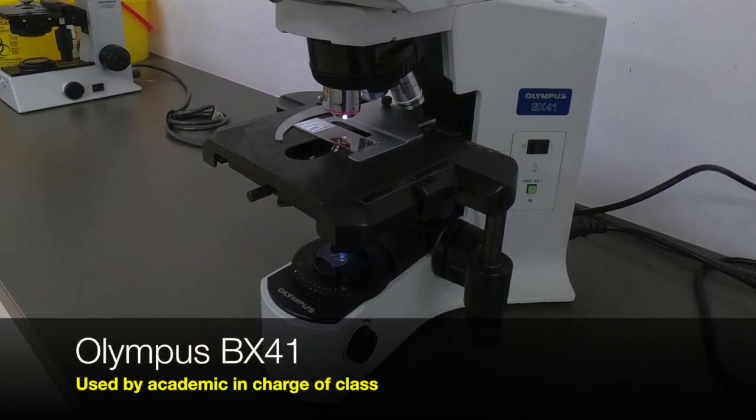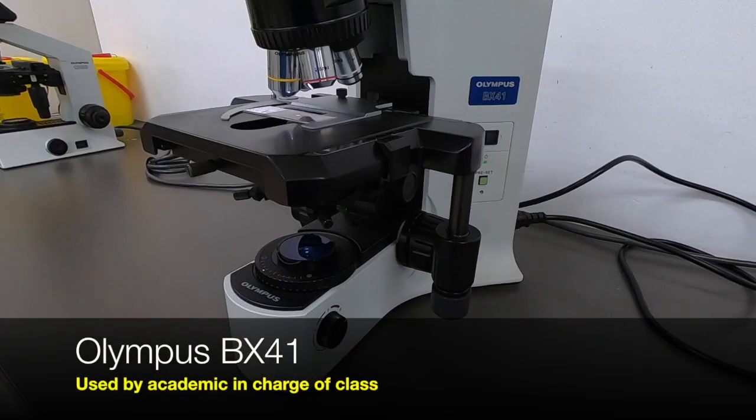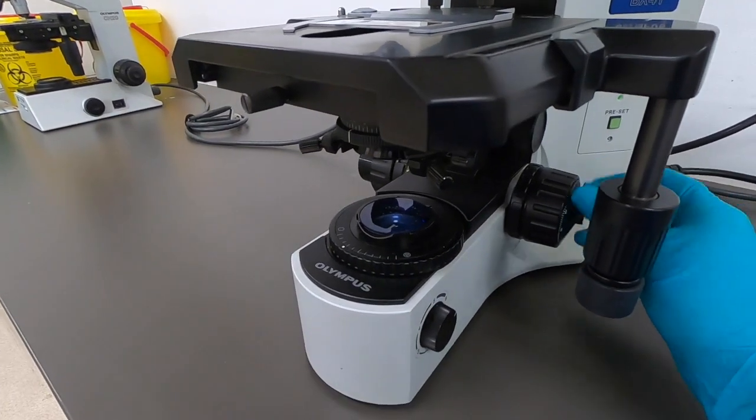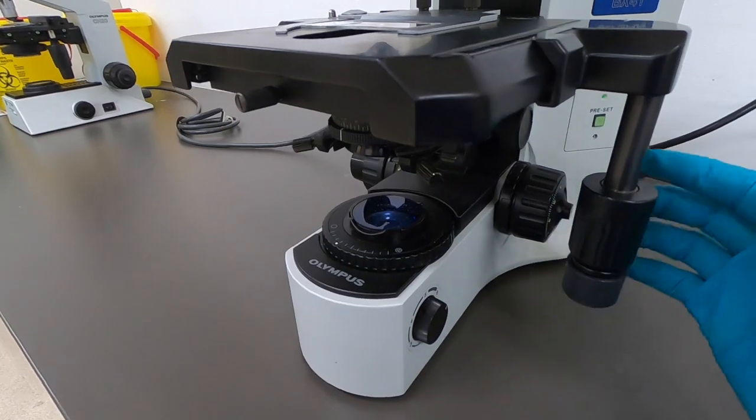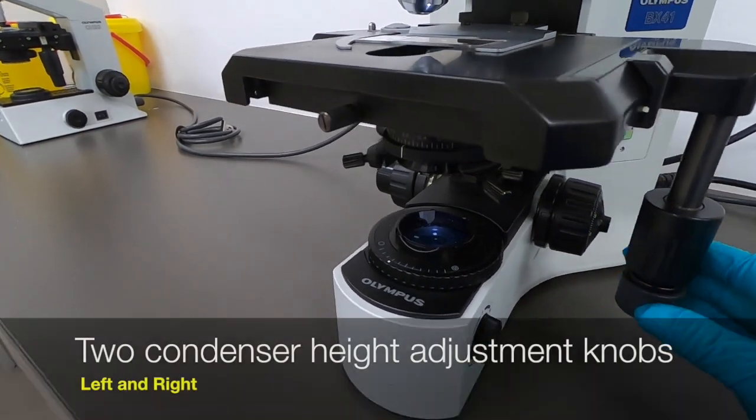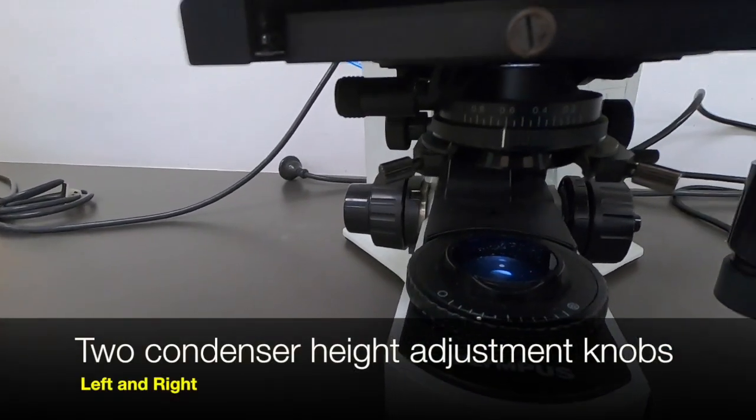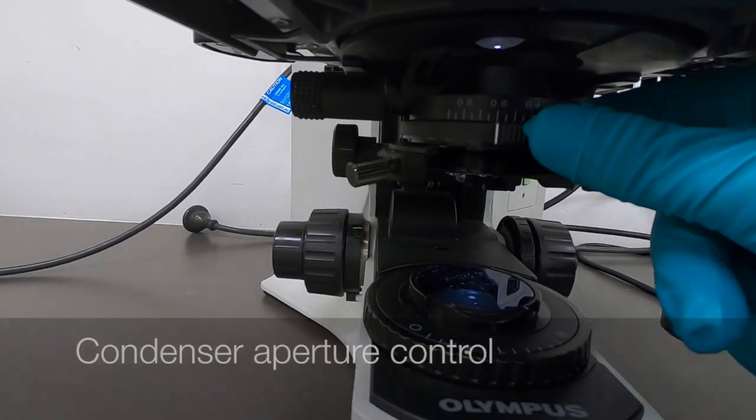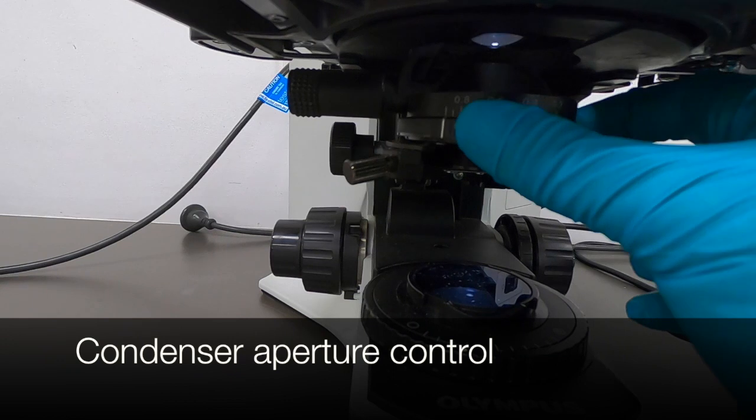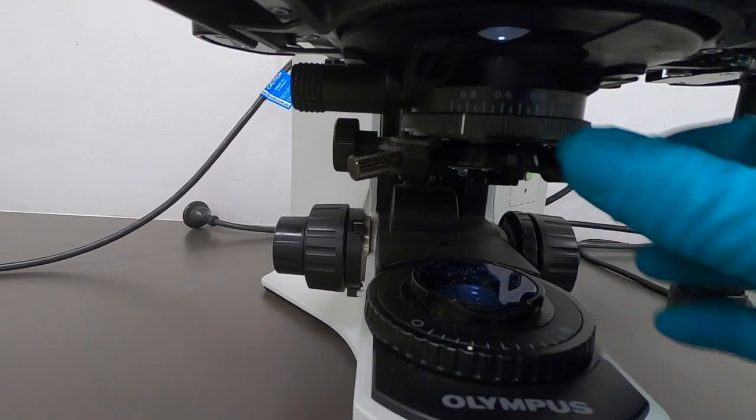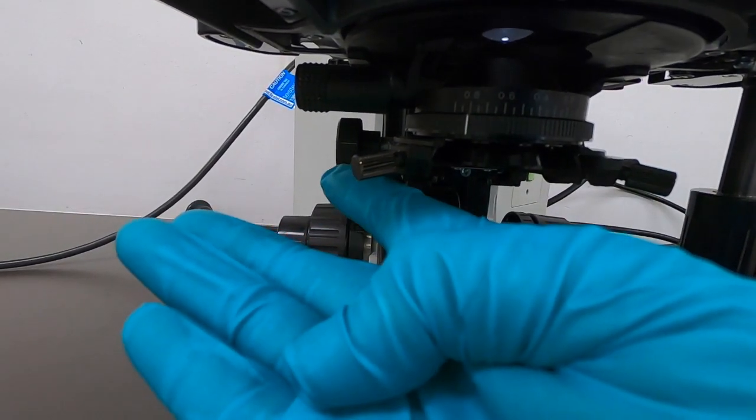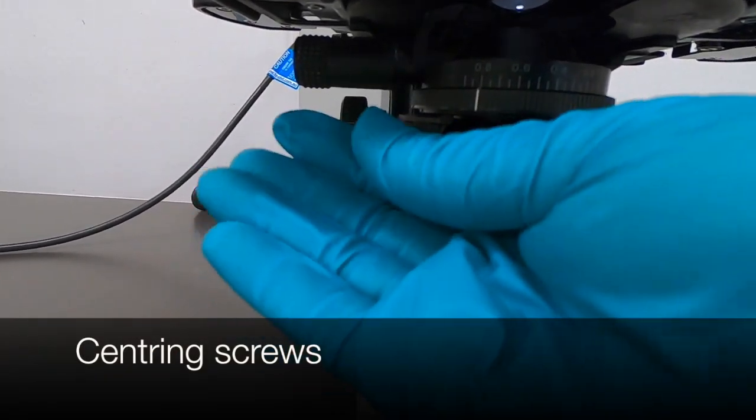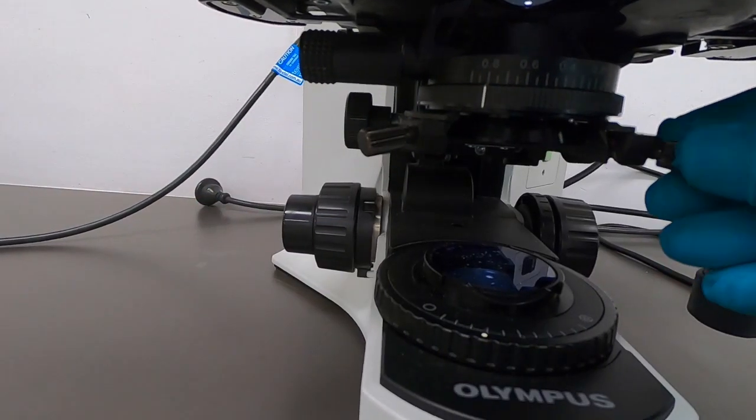Now, switching to the Olympus BX41, this is not available to students, but would be available to one of the teaching staff. There's actually two height adjustment knobs left and right for the condenser. We've got the aperture control here, again, with some numbers which you could record to save time corresponding to each lens. We've got these centering screws for centering the condenser, and we've got control over the field aperture.